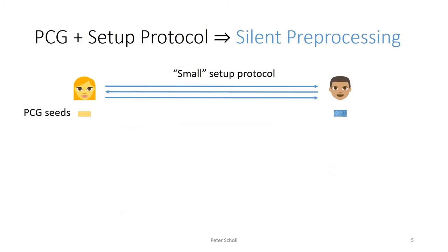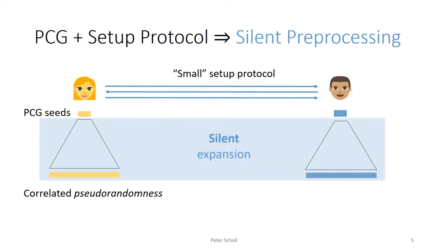Given a PCG to produce some correlated randomness, all we need is a secure setup protocol to actually generate the PCG seeds without a trusted third party. Putting these things together, we obtain a secure computation protocol with what we call a silent preprocessing phase: just a small setup protocol to generate the short seeds, followed by silent and completely local expansion to produce the correlated randomness used in the protocol.